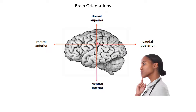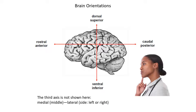The third axis is the one not shown on screen — perpendicular to the screen, coming out or going into the screen. That axis is called the medial-lateral axis. Things towards the side, closer to the ear, are more lateral, and parts of the brain towards the middle, closer to the midline, are called more medial.